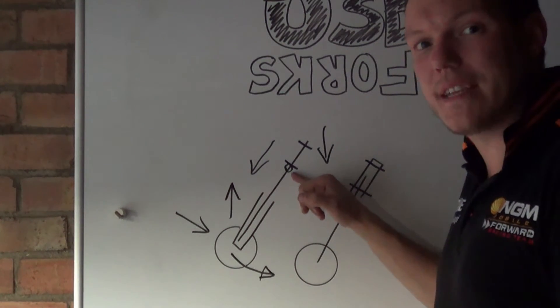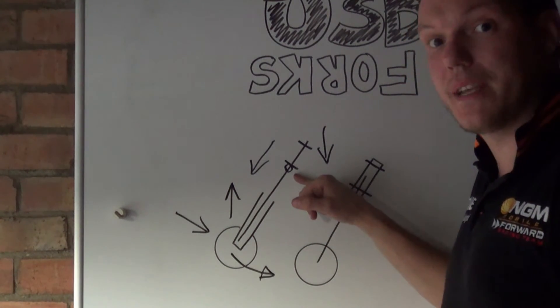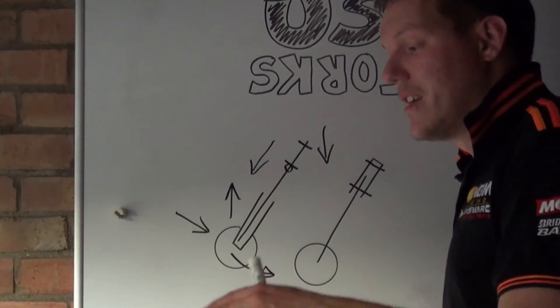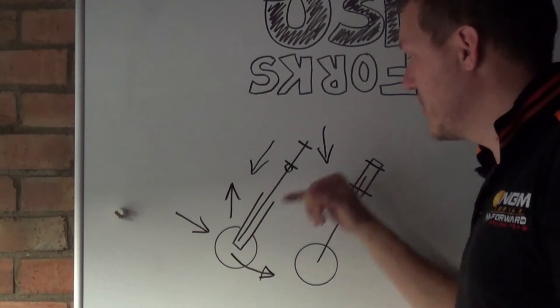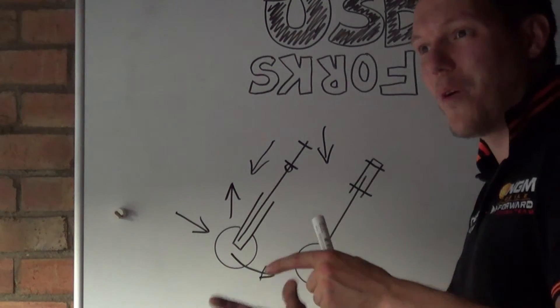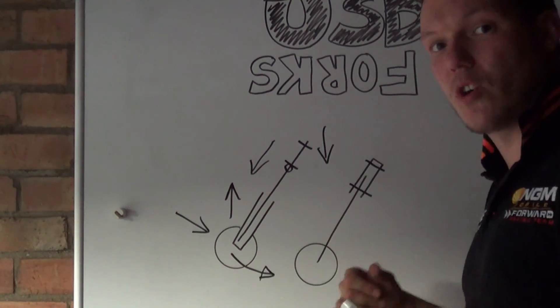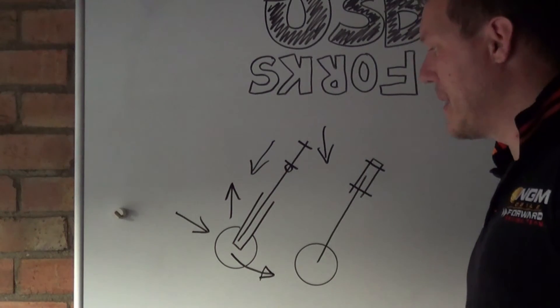This puts added stress on the bearings that are placed here, and hence why if you look at your bearings, the bearing on the bottom of your steering column is a lot bigger and beefier than the one at the top. That's because it has to contend with this bending.